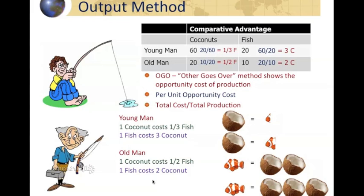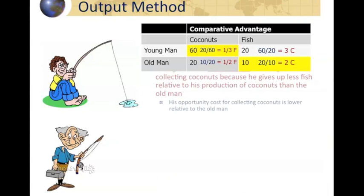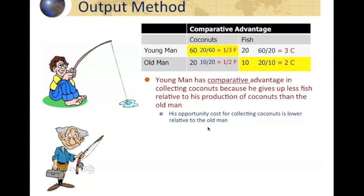When the young man produces one fish, it costs him three coconuts — one fish costs him the opportunity to produce three coconuts. The old man, when he catches a fish, it costs him the opportunity to collect two coconuts. Who gives up more? In this case, the young man gives up more, which means the old man has a comparative advantage in fish. The young man gives up less fish when he produces a coconut than the old man, and the old man gives up less coconuts when he produces a fish than the young man.